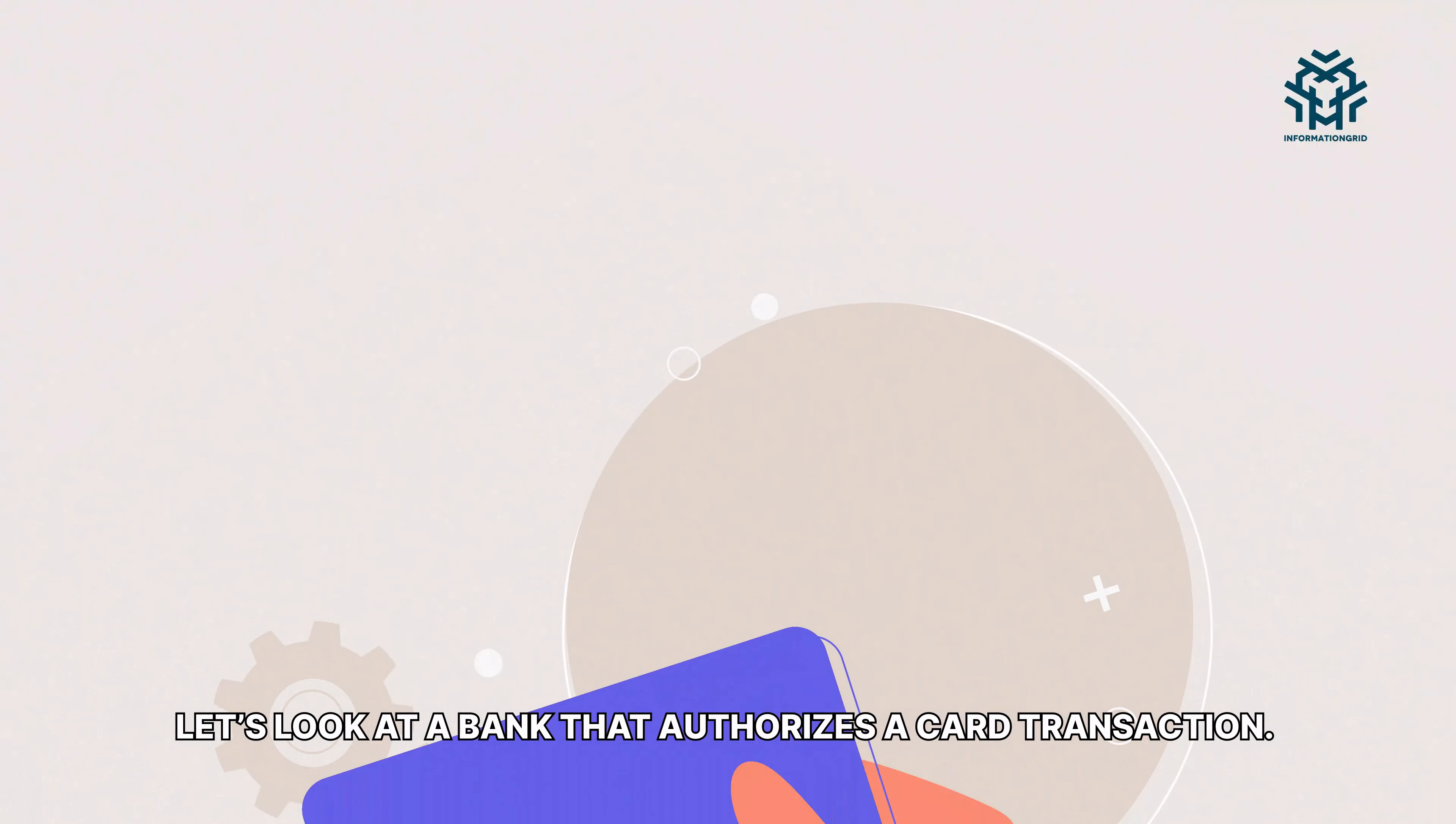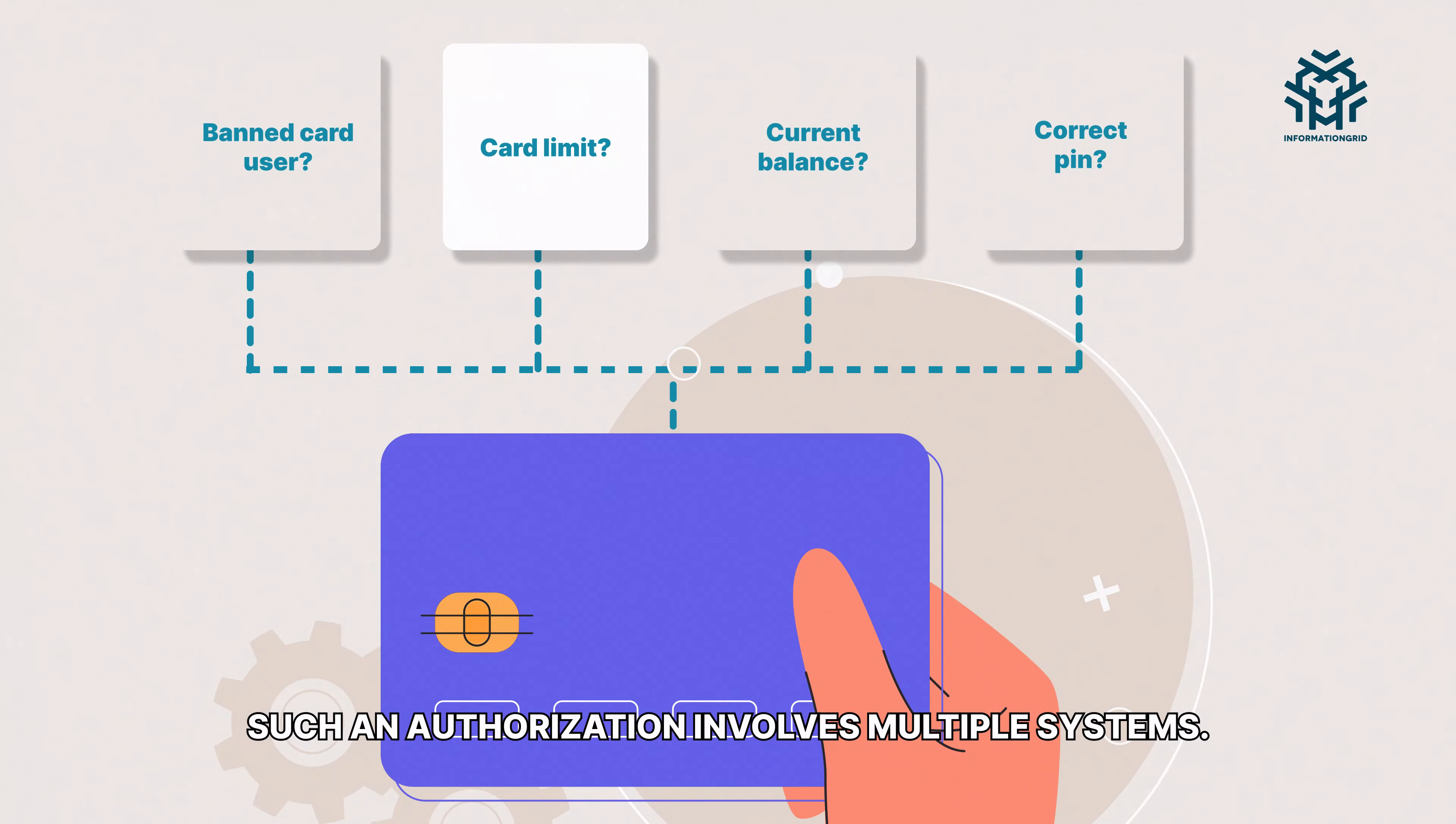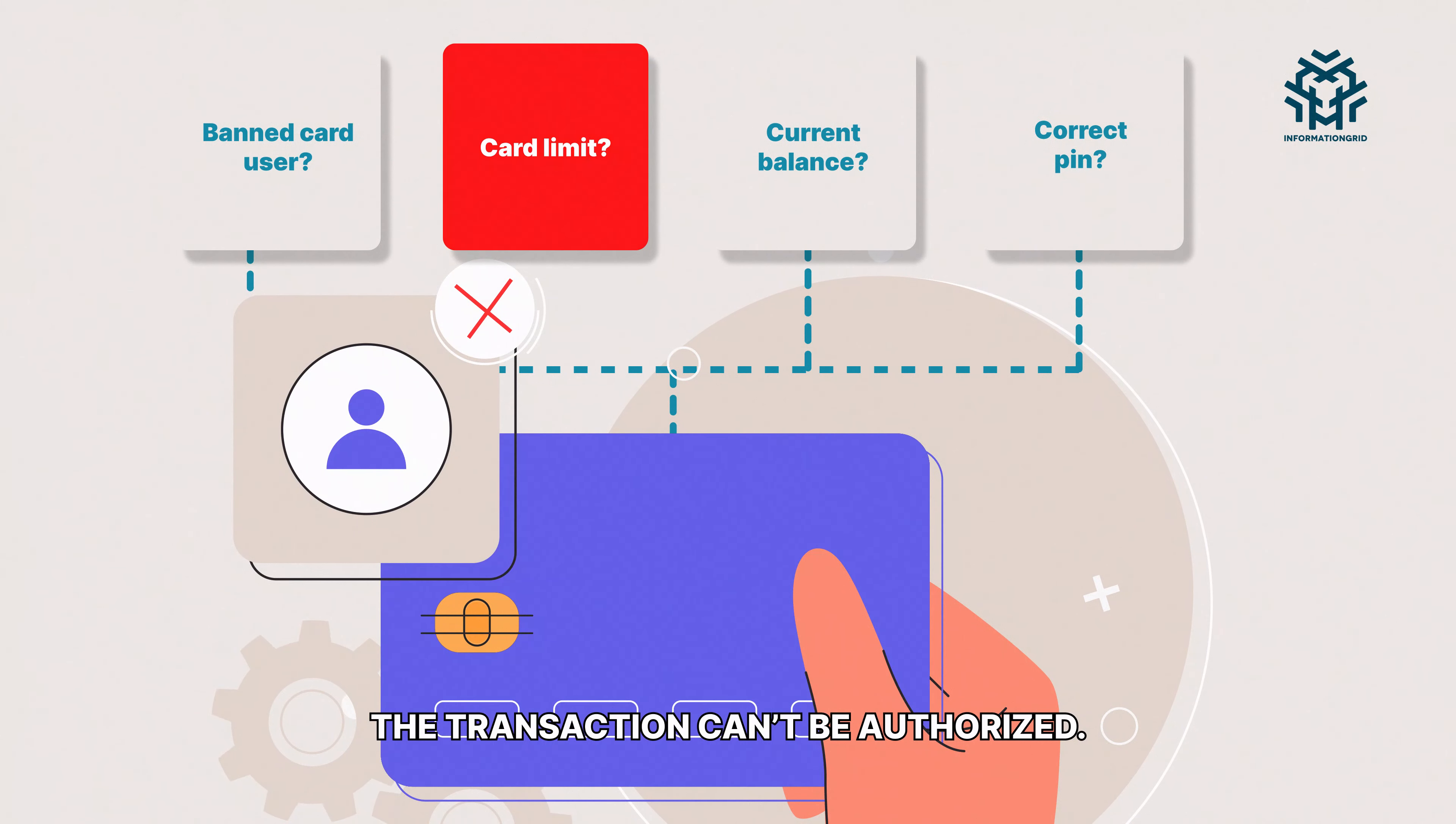Let's look at a bank that authorizes a card transaction. Such an authorization involves multiple systems. If one of these systems fail, the transaction can't be authorized.